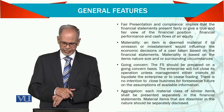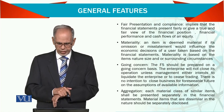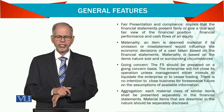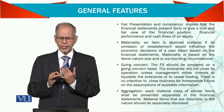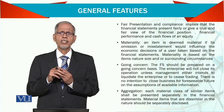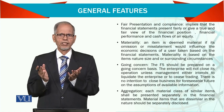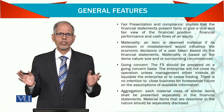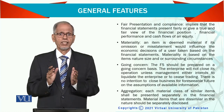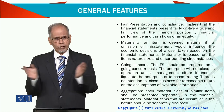Then we have aggregation. Each material class of similar items should be presented separately in the financial statement. Material items that are dissimilar in nature should be separately disclosed. For example, if you have a photocopying machine and are incurring various costs on it, you put all those expenses together in one item — printing expense — because they are similar. It is not necessary for each and every item to be disclosed separately. Similar items should be aggregated together. But if it is a big amount, it should be shown separately; if it is small amounts, you can put them together in one item.